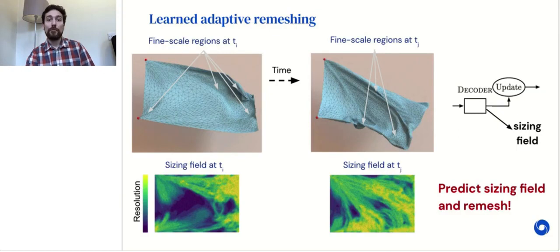In the case of meshes, many simulators use dynamic remeshing to dynamically adapt the resolution of the mesh to different parts of the simulation. One approach is to specify a sizing field that indicates the required resolution for each region. In this case, we also have our model predict this sizing field and recompute the mesh according to the sizing field at each step.